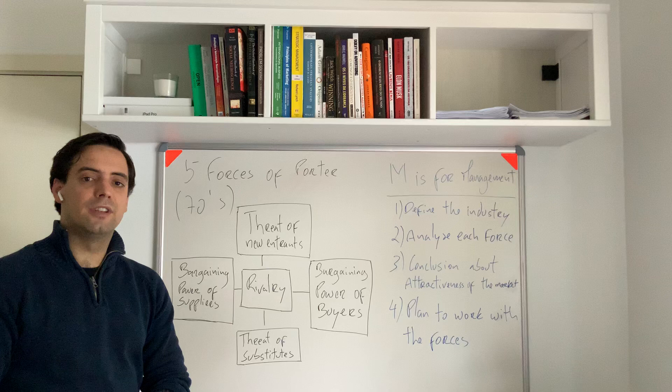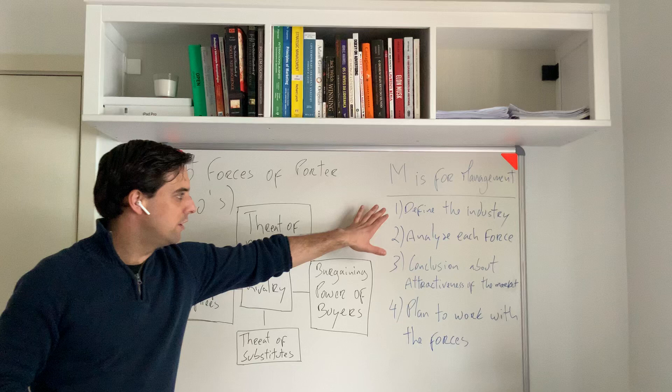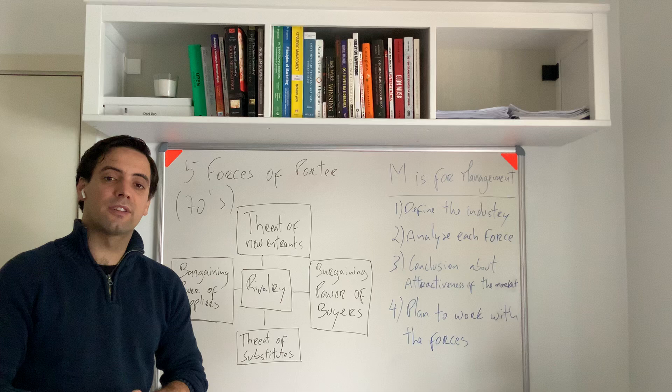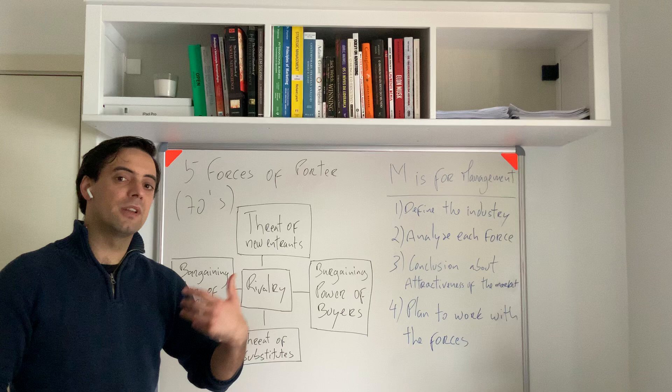Then, we have the threat of substitutes and the rivalry, that's the competition. Now, these two are kind of related in the sense that with the definition of the industry, you can measure which one is what. Substitutes are the products that actually fulfill the same need, but they are not the same product. Let me give a quick example. If you are talking about mass market shampoos, other brands of shampoo actually are not substitutes, they are competition.